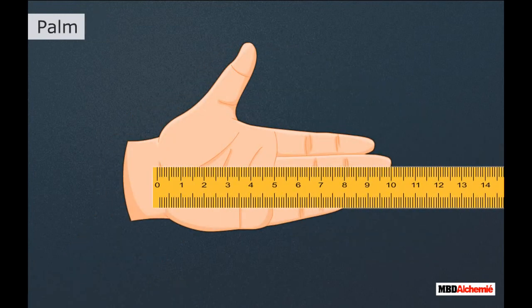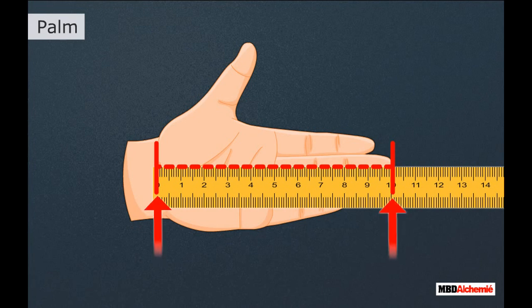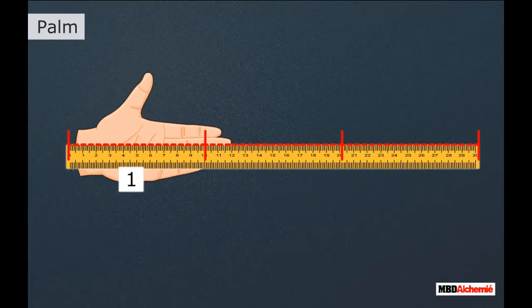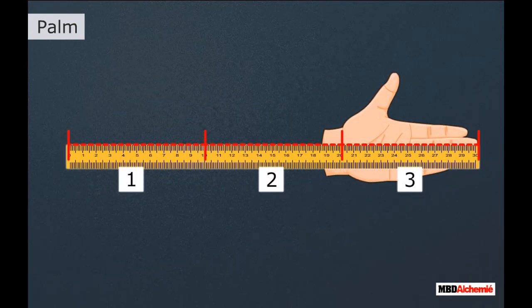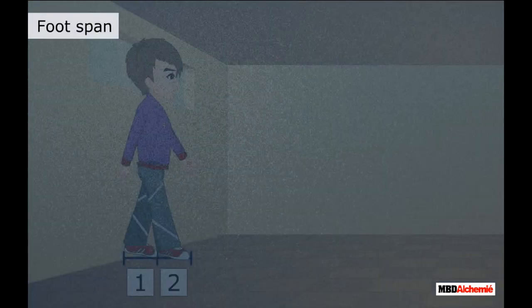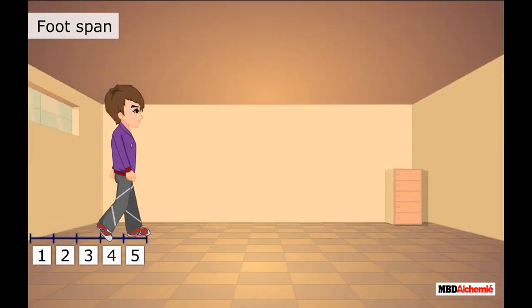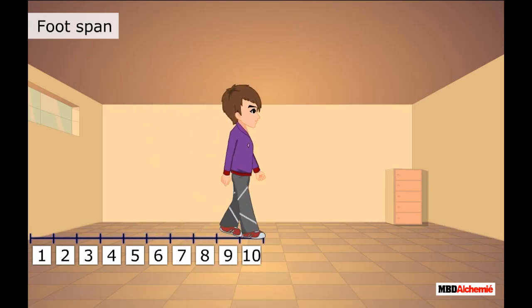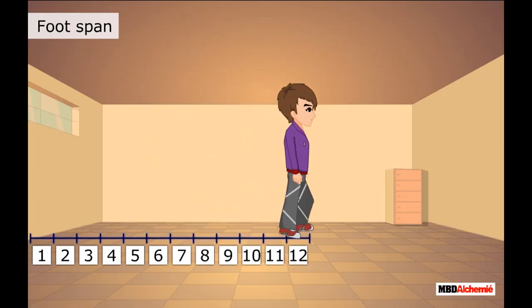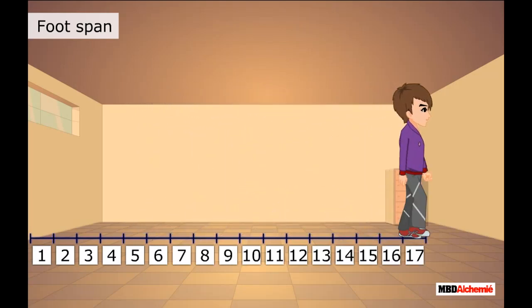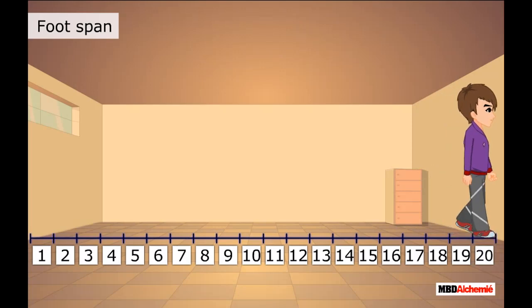Palm is the unit of distance equal to the length of the hand from the wrist to the end of the middle finger. For example, the length of this scale is about three palms. Foot span is the unit of distance based on the length of actual feet. For example, the length of this room is about twenty foot spans.